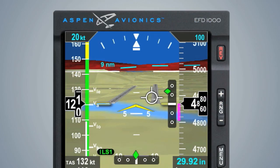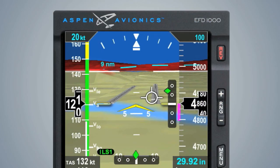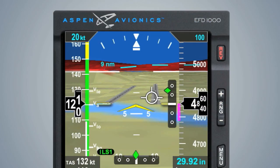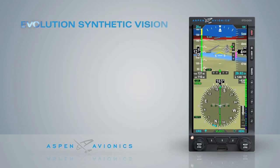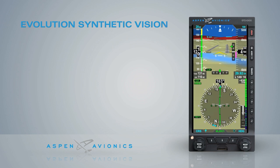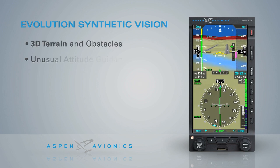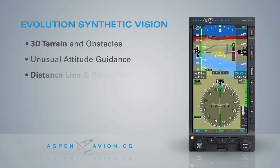The next great addition to the Aspen displays is Evolution Synthetic Vision. Evolution Synthetic Vision includes all of the features aircraft operators expect of synthetic vision systems, including 3D terrain and obstacles, unusual attitude guidance, and distance line and range marker.